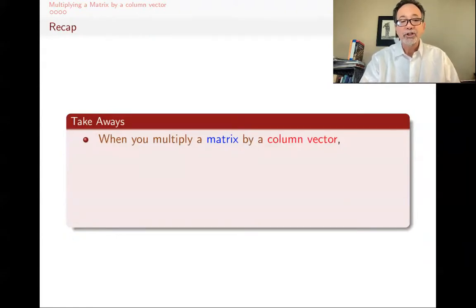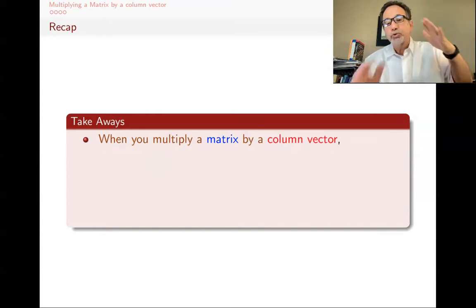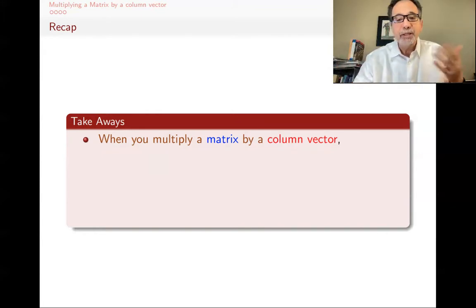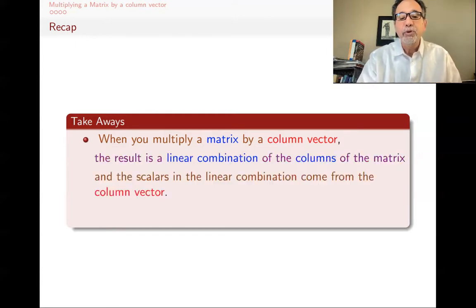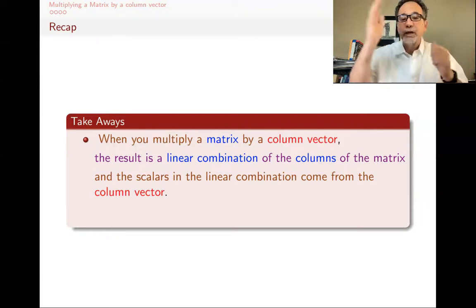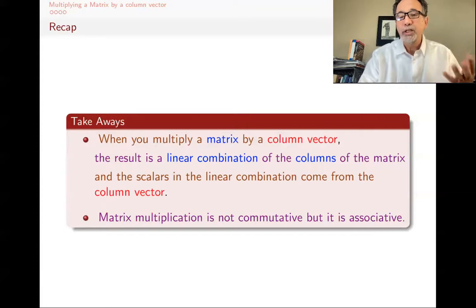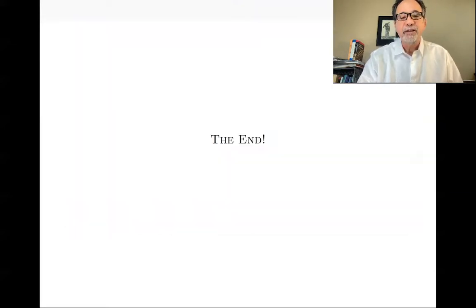So what are the takeaways from this lecture? This is a mantra to remember: when you multiply a matrix by a column vector, the result is a linear combination of the columns of the matrix, and the scalars in that linear combination come from the column vector. You multiply a matrix by a column vector, you get a linear combination of the columns of the matrix. The other thing we'll use almost daily without mentioning it explicitly is that matrix multiplication is associative — it's not commutative, but it is associative. This is the end of this lecture, and hopefully I'll see you at the next one.